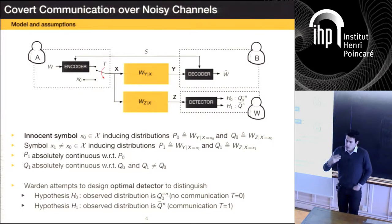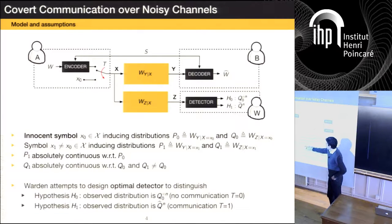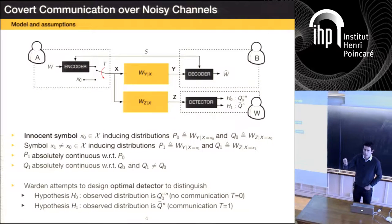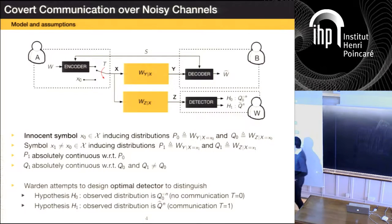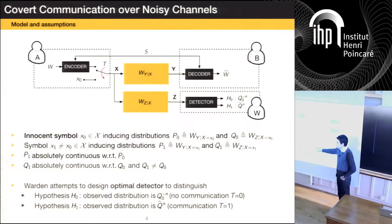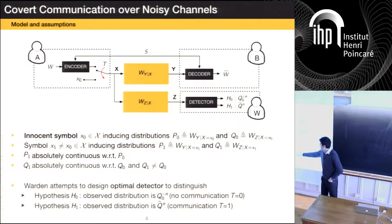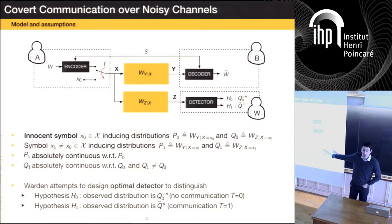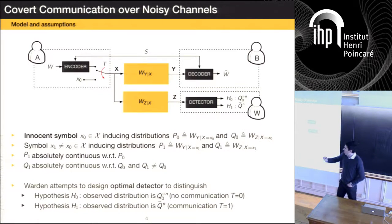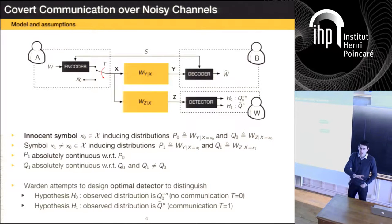I need to make a few other assumptions to make the problem non-trivial. The key one is that distribution Q1, induced when you communicate symbol X1, is absolutely continuous with respect to distribution Q0. This means the support of Q1 is included in the support of Q0. If that were not the case, you could not be covert, because every once in a while a symbol would be detected. Also, Q1 must not equal Q0, because if they're equal you're automatically covered. I'll also make the assumption that it's true for the main channel as well — though for now, accept that if I don't make it, I operate in a different regime with different result forms. On a Gaussian channel, all these assumptions are satisfied.